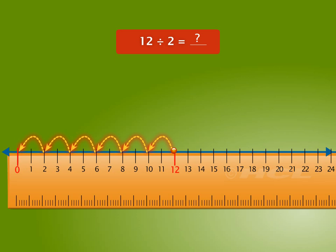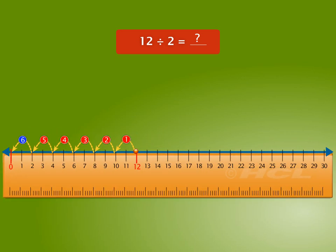What is the number of skips taken to reach 0 from the dividend 12? 6 is correct. Skip counting backwards by 2, we took 6 skips to reach 0 from 12. So, 12 divided by 2 is equal to quotient 6.